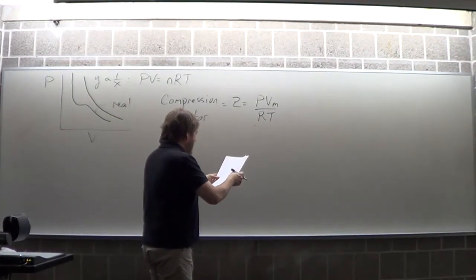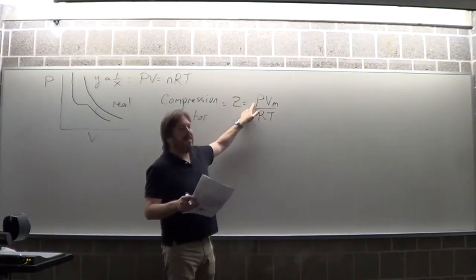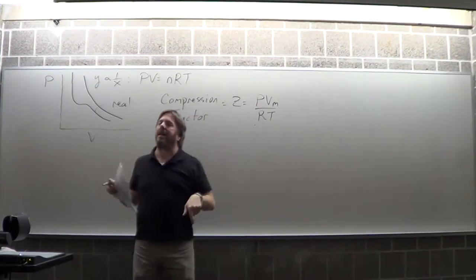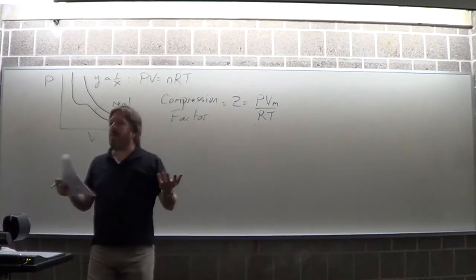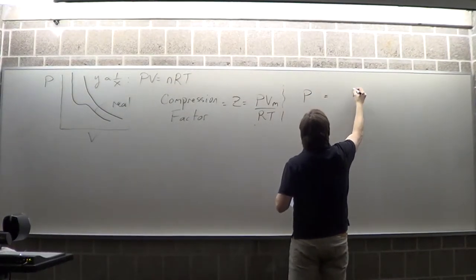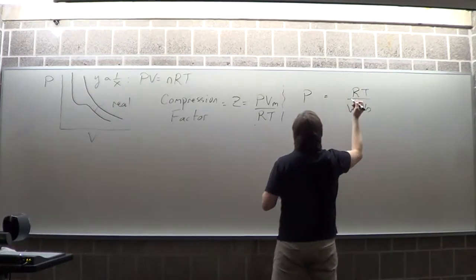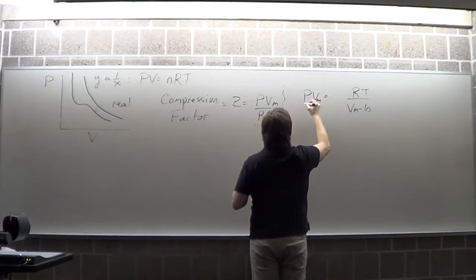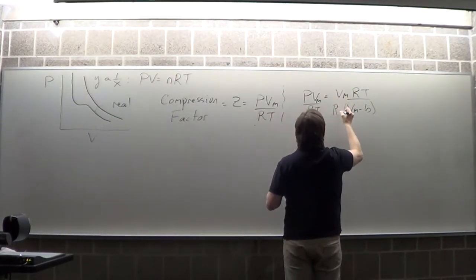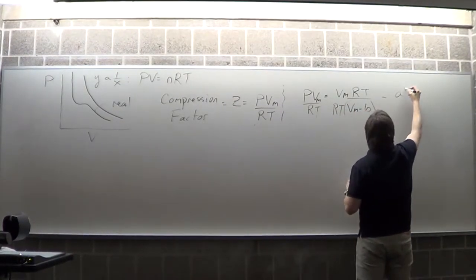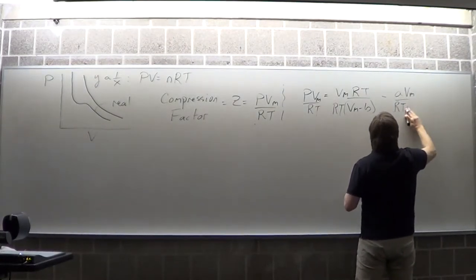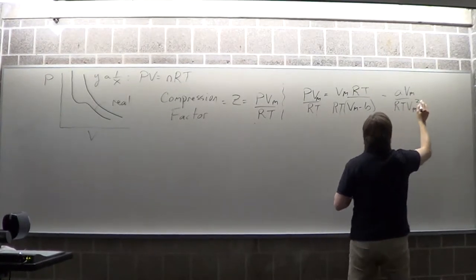To get the compression factor from Van der Waals, I take the Van der Waals pressure, multiply by V_M, and divide by RT. So I get Z = V_M/(V_M − B) minus A/(RT·V_M). From this I can see immediately that Z should be close to one, and that the B parameter drives it up while A drives it down.